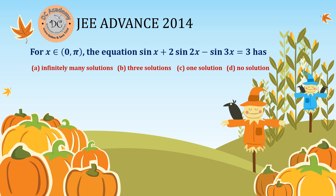In this video we're going to solve a particular problem which appeared in the year 2040. It's an advanced and very interesting problem. For x belonging to (0, π), the equation sin x · sin 2x · sin 3x = 3 — how many solutions does it have? We need to find the number of x in (0, π) such that the equation is satisfied.